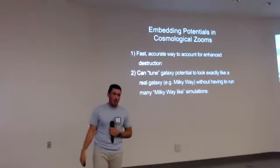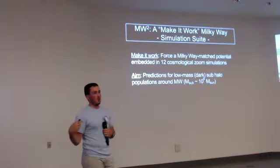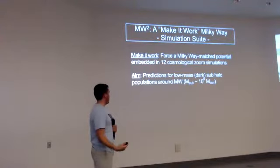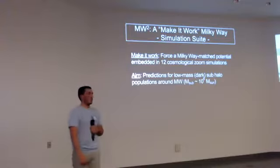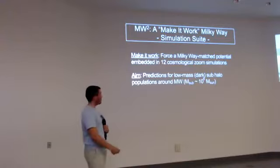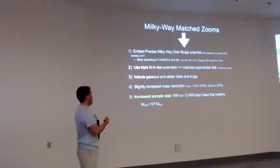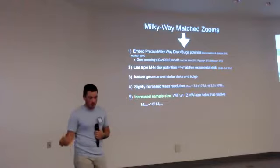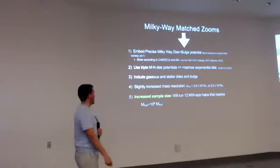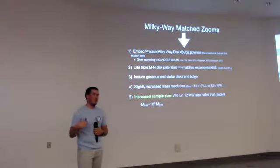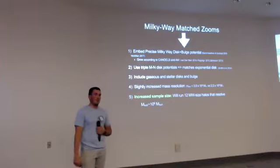With this foundation laid, I'd like to introduce the Make-It-Work Milky Way simulation suite, where 'Make It Work' means we are going to force our galaxy potentials to be Milky Way-like as best as we can. We're going to embed them in 12 different cosmological halos with the goal of making predictions for low-mass dark sub-halos. I matched the z=0 Milky Way as best as I could, growing it using CANDELS and abundance matching. I use a triple Miyamoto-Nagai disk in order to match my exponential disk, include multiple components, slightly increase mass resolution compared to the Latte simulations, and — probably the biggest thing — increased my sample size to get a better handle on the halo-to-halo variation that is present.